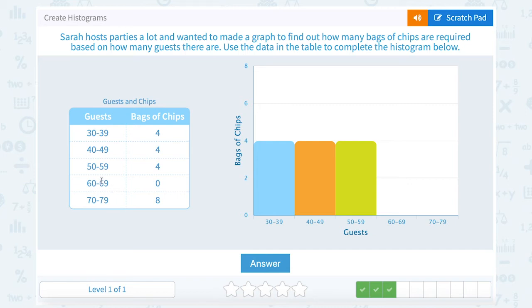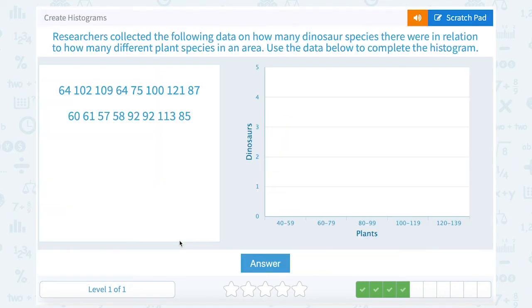60 to 69 guests there were no bags of chips. Okay, so notice zero would be at the bottom, so I'm not going to put anything for 60 to 69, and then 70 to 79, eight bags of chips.